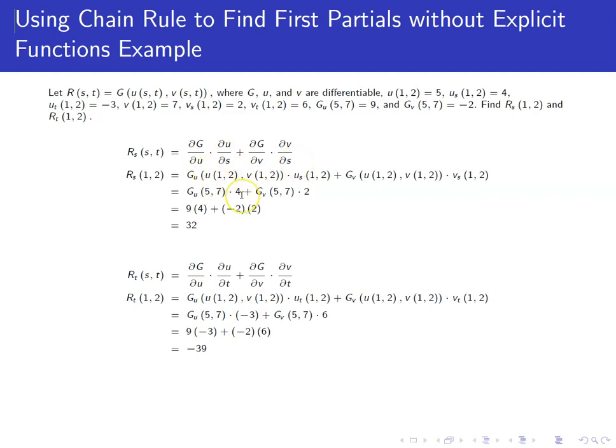Okay, so really I don't have explicit functions, so the best I can do is write it in terms of the symbols that we have. I know something about the partial of G with respect to U, so I'm just going to replace this symbol with this symbol. Partial of G with respect to U.